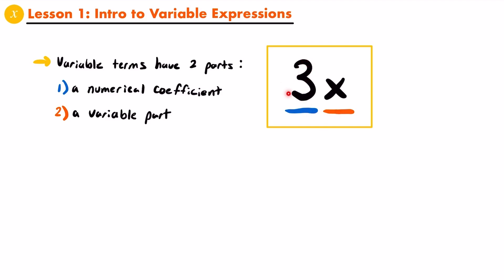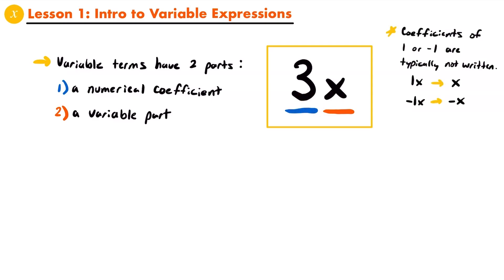That number out front — in this case 3 — while you could refer to it as just a number, the mathematically correct way to refer to it is to call it the coefficient of the variable term. That's a word you will see used a lot throughout algebra. If you see the word coefficient, it's just referring to the number in front of a variable term. Now, a couple of side notes: coefficients of 1 or negative 1 are typically not written out explicitly. We don't really write 1x — we just write x. Because anything times 1 is just itself. In the same way, rather than write negative 1x, we just write negative x.